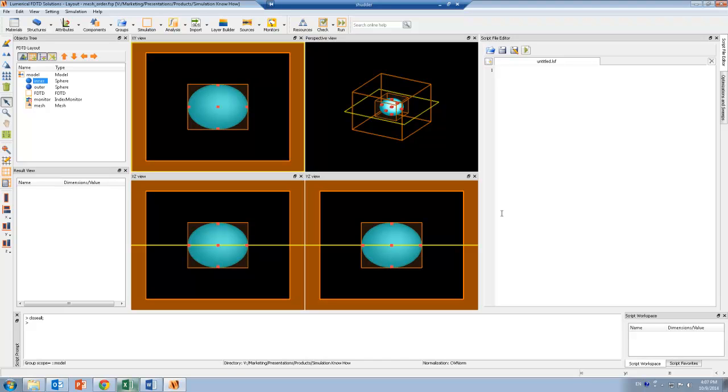So let's take a look at this in FDTD solutions. Here I have a core-shell structure, which is formed by an inner sphere and an outer sphere with different radius. So I've also added an index monitor, which is going to allow me to see what the refractive index is used in the actual simulation.